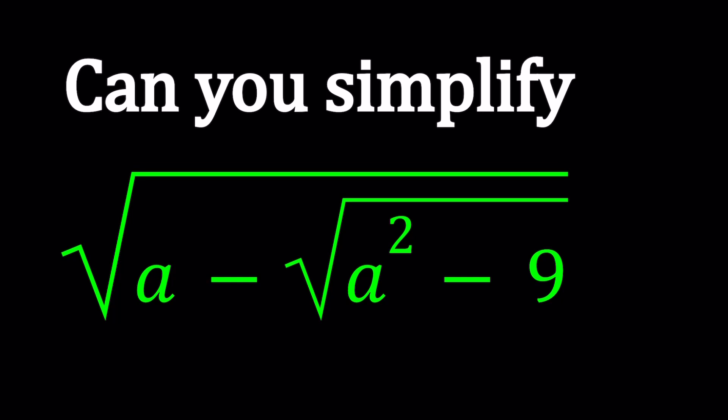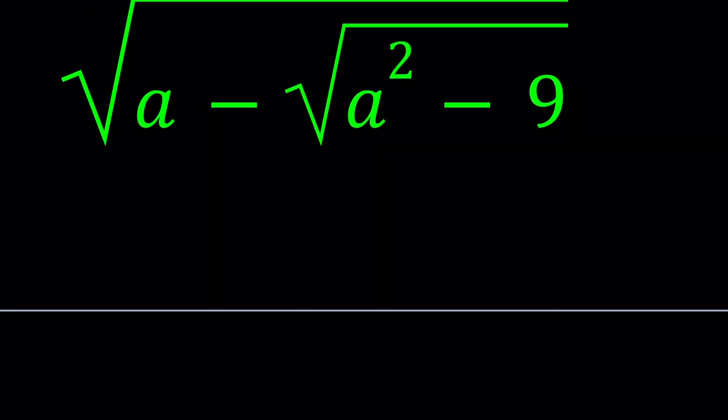In other words we're going to be denesting this radical even though we do not know the value of a. So let's go ahead and look at a numerical example. Hopefully that will help us understand what's going on here and then we'll proceed with the solution. I'll be presenting three methods. So let's go ahead and replace a with four for example. And why did I pick four? Why not one?